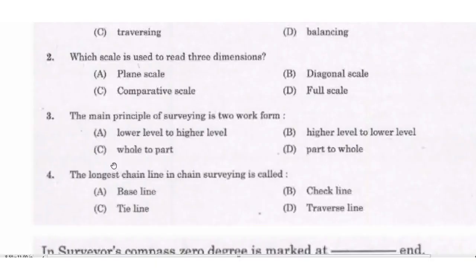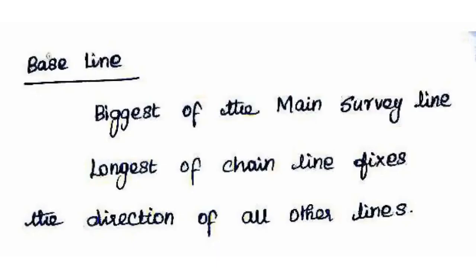Next question: the longest chain line in chain surveying is called the baseline. The right answer is baseline. Main survey stations are connected to the main survey line, and the baseline is the longest and most accurate chain line measured.